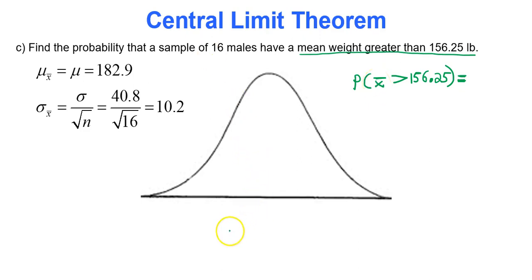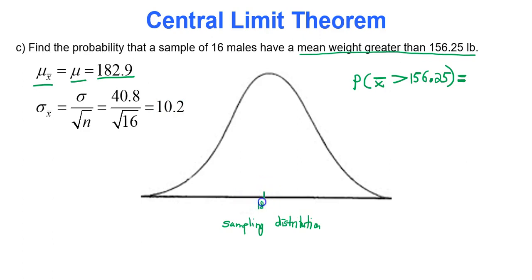We are now talking about a sample mean — a sampling distribution. This is where the central limit theorem kicks in. The mean of the sampling distribution is just the mean of our given situation, the mean weight of males, 182.9 — that does not change. It's the standard deviation where you need to be careful. My standard deviation of sample means, sigma sub x-bar, equals 40.8 divided by the square root of 16, which is 40.8 divided by 4, or 10.2.